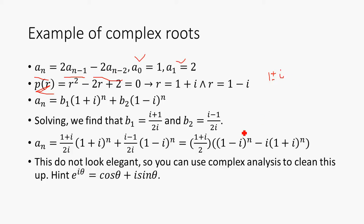So that means our recurrence takes the form that you see here. But notice that if we solve it, we see that our coefficients become these two complex terms here, (i+1)/2i and (i-1)/2i. So we see that the recurrence will take this form here, but that doesn't look too good.